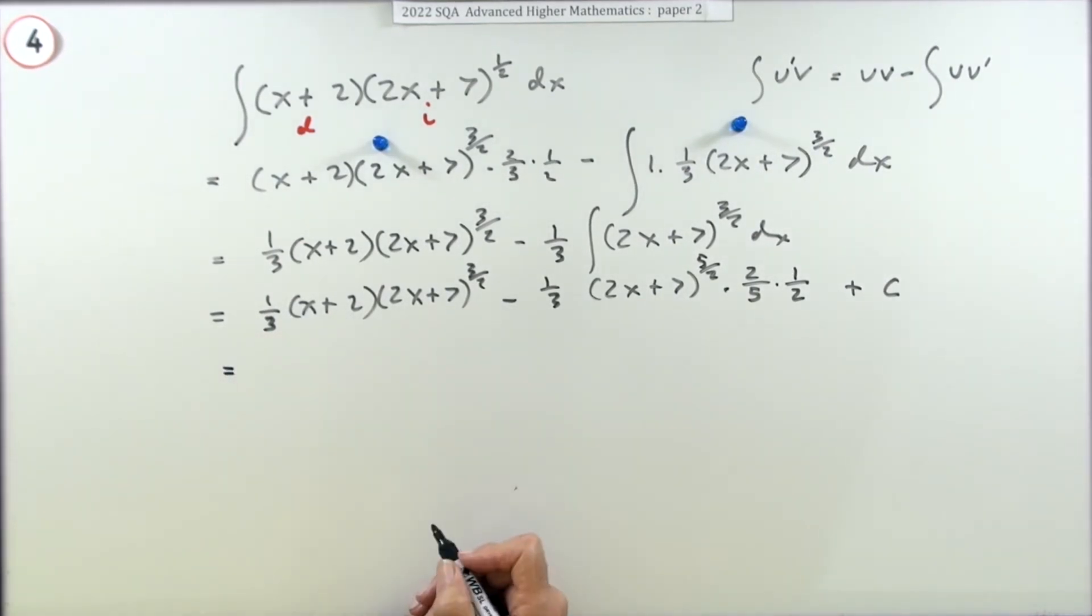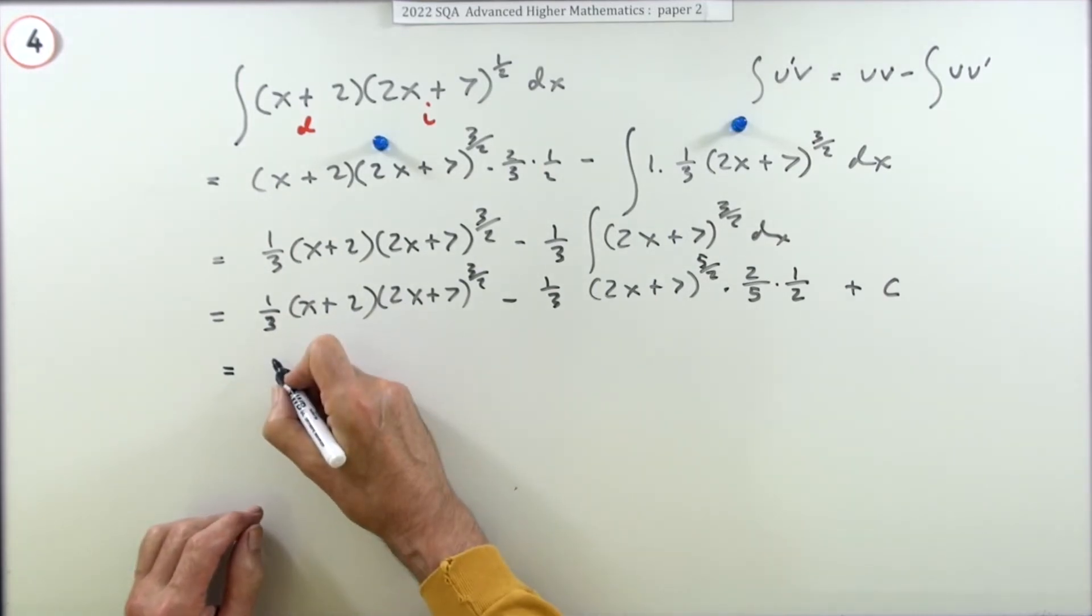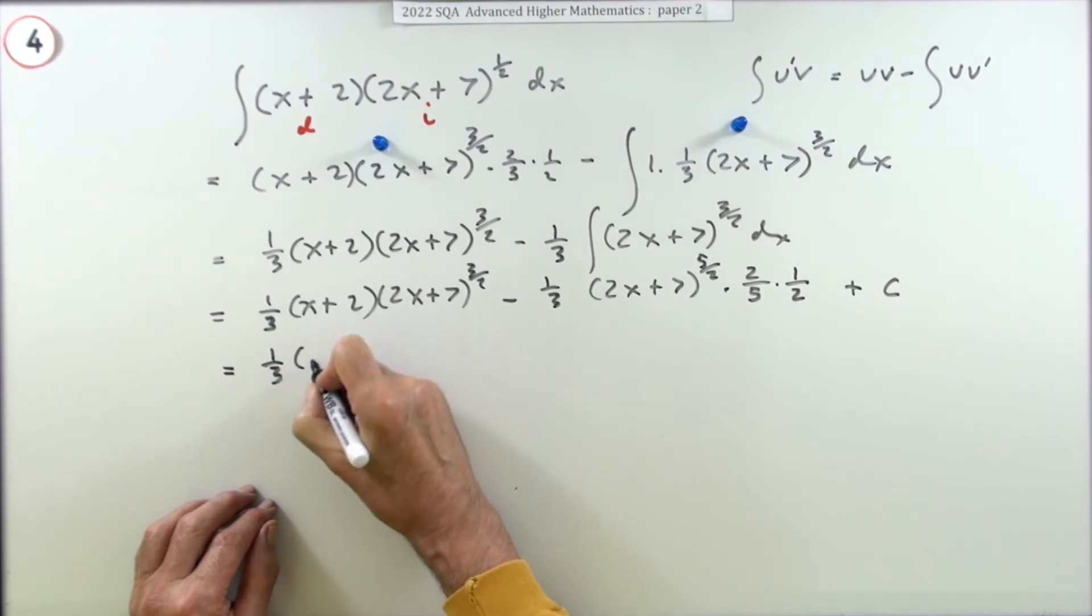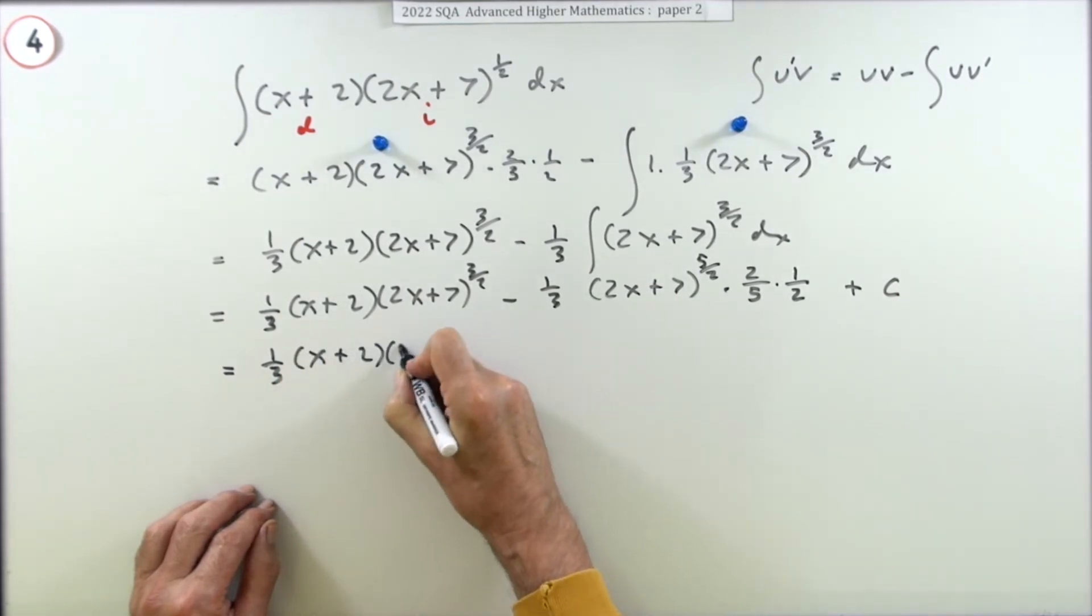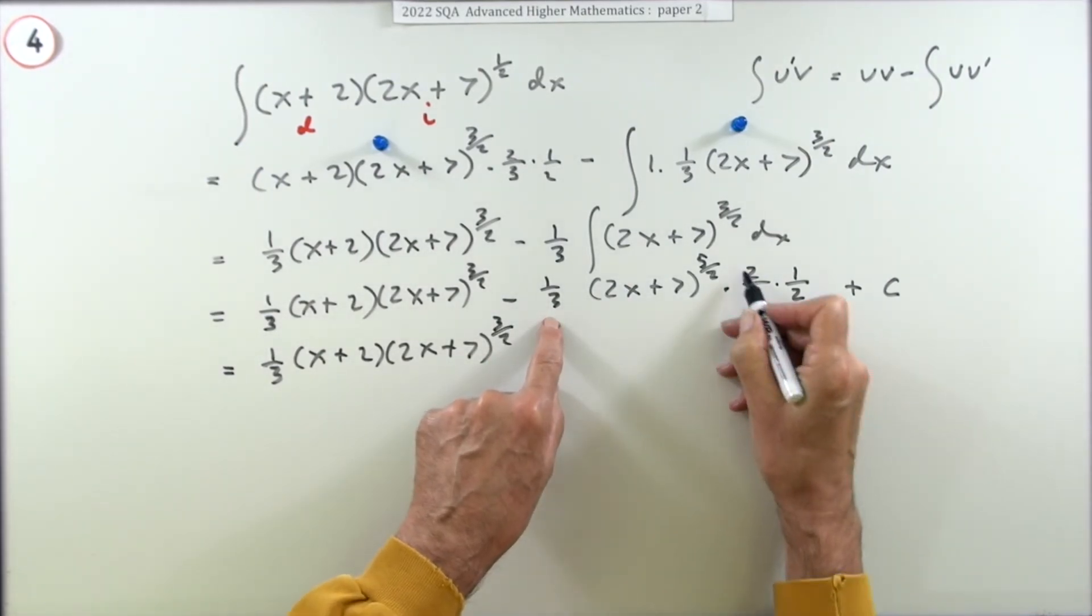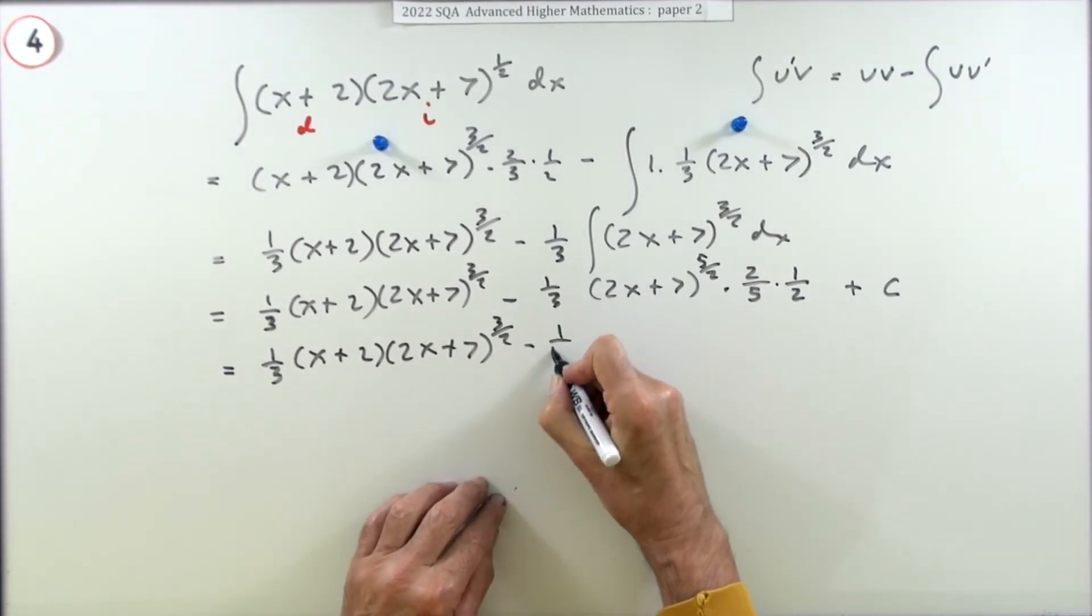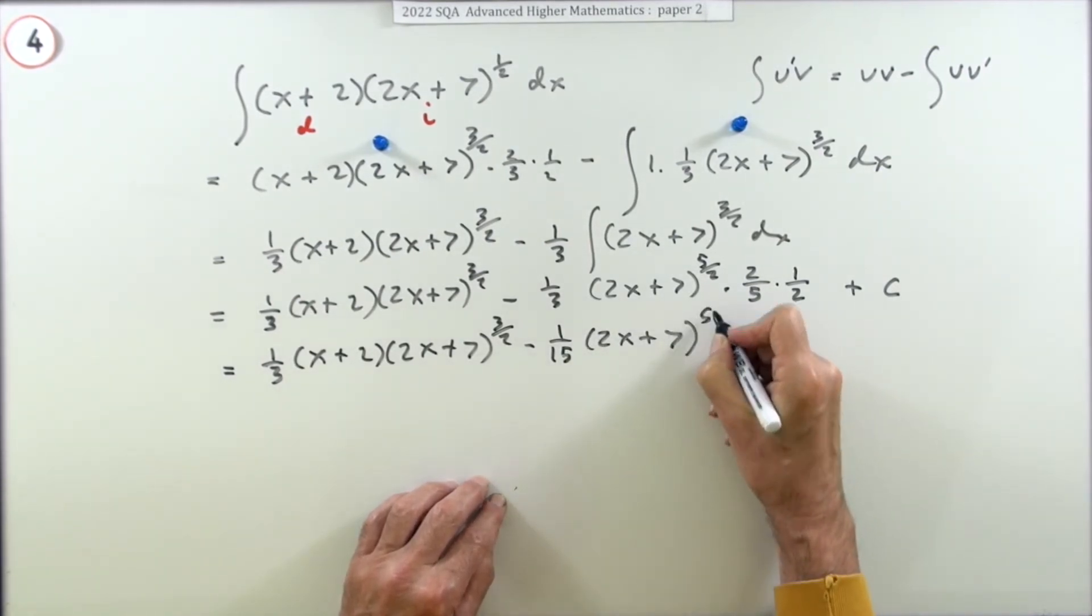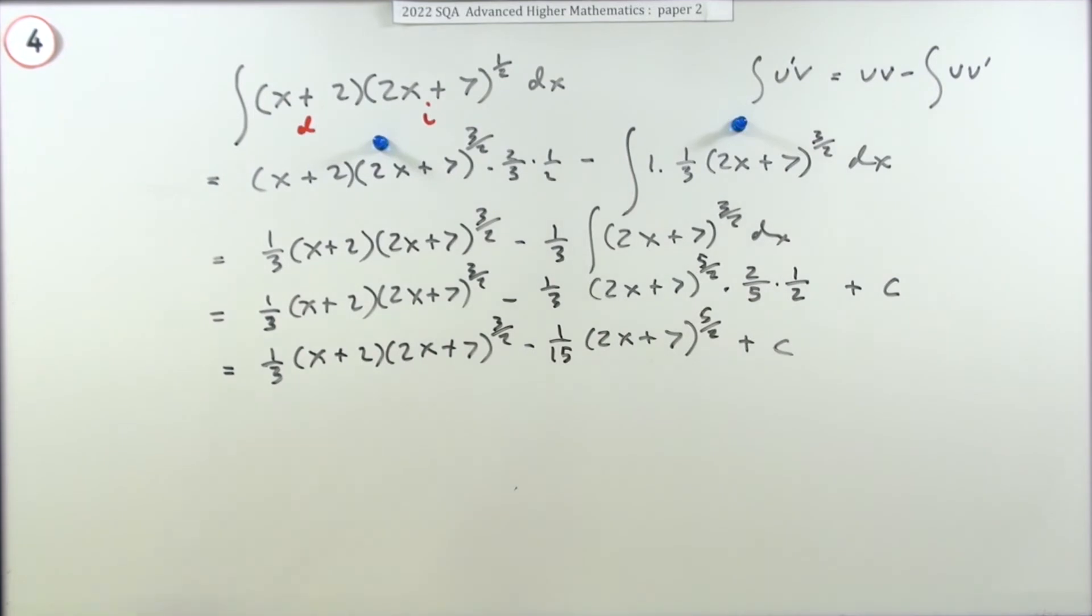It's just tidy up. It doesn't actually say tidy up, it just says carry out that integration. So one third of (x + 2) times (2x + 7) to the 3 upon 2. Now this lot here, they cancel out - that's a 15th. Minus a 15th of (2x + 7) to the power 5 upon 2 plus c. That gets the last mark.